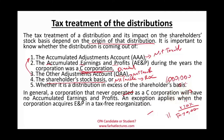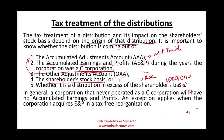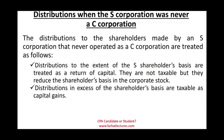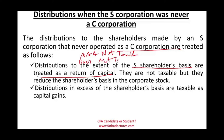In general, a corporation that never operated as a C will have no AEP. If there is also no tax-exempt interest or life insurance proceeds, there is no OAA. So for a pure S-Corporation, distributions will either be non-taxable — coming from AAA or shareholder basis as a return of capital — or if distributions exceed basis, the excess is capital gain.